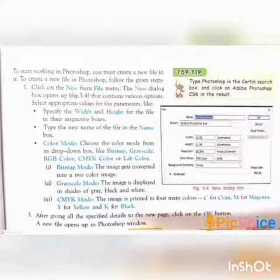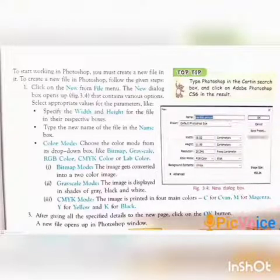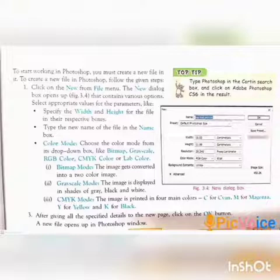Take page number 27. Topic: how to create a new file in Photoshop. Step 1: Click on the File menu and choose the New option. Then select appropriate values for the parameters — width and height for the file, type the name of the file in the name box, and choose the color mode from its drop-down box. A new dialog box will appear.